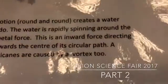Spinning the bottle in a circular motion round and round creates a vortex that looks like a mini tornado. The water is rapidly spinning around the centre of the vortex due to centripetal force. This is an inward force directing an object or fluid such as water towards the centre of itself. A tornado is a vortex in nature. Hurricanes are caused by a vortex too.